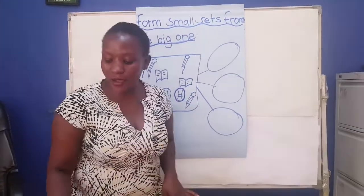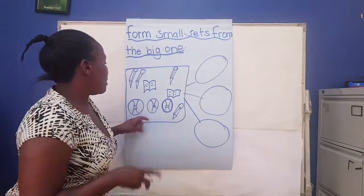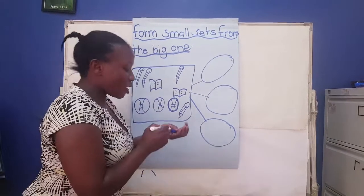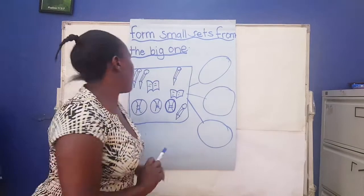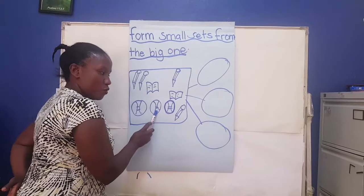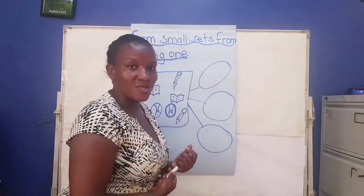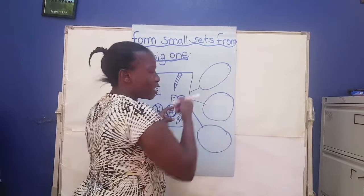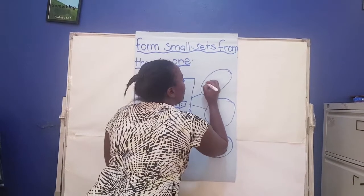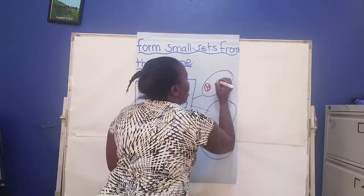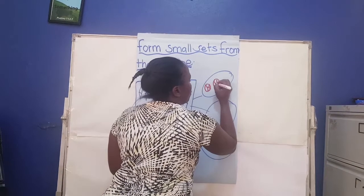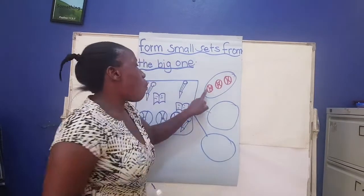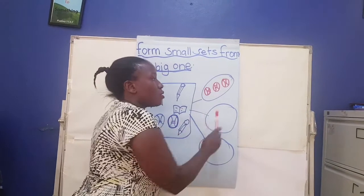Let's first make one set. We begin with balls. Let's count the balls and form a set of balls. One, two, three balls. Now we make a set of three balls. Which circle should we use? Let's use the first one. One, two, three balls.